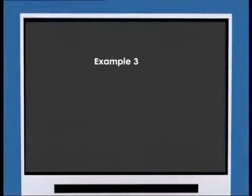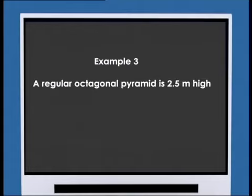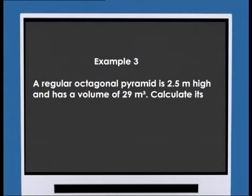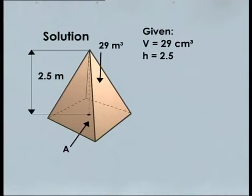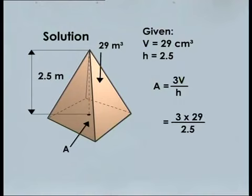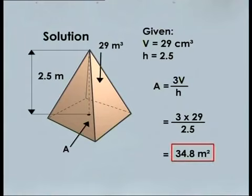Example 3: A regular octagonal pyramid is 2.5 meters high and has a volume of 29 cubic meters. Calculate its base area. Solution: Given V = 29 m³ and H = 2.5 m. A = 3V/H = (3 × 29)/2.5 = 34.8 square meters.